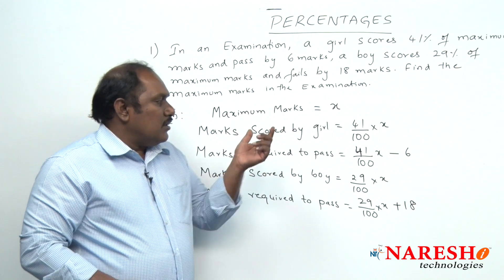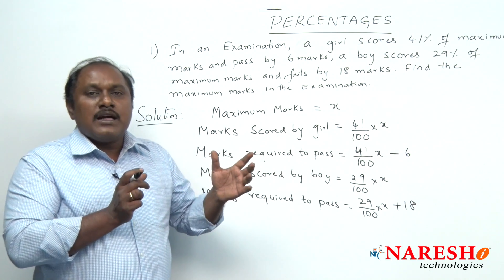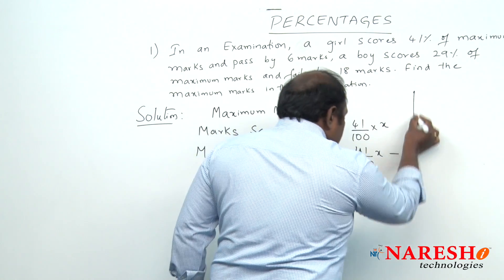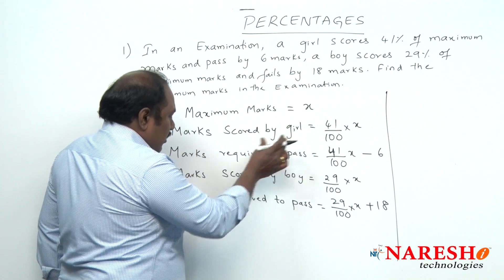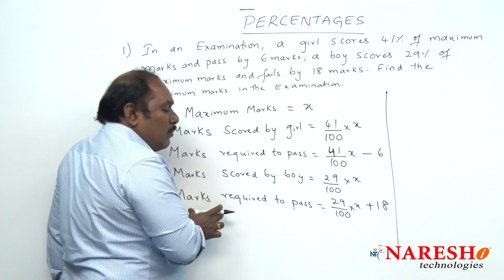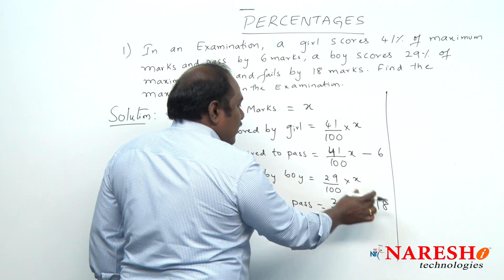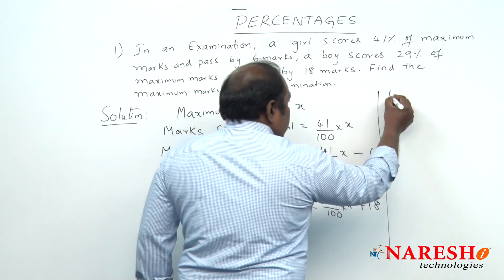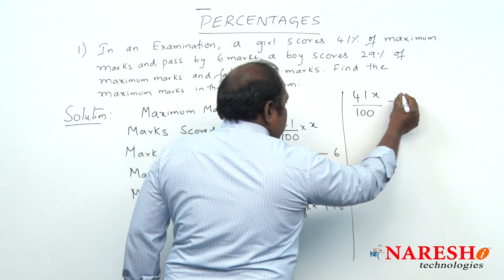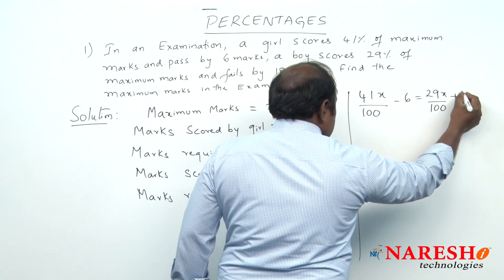Here both the girl and boy are writing the same examination, so definitely for both boy as well as girl, the marks required to pass should be equal. When I talk with respect to girl, marks required to pass is 41x/100 − 6, and with respect to boy, marks required to pass will be 29x/100 + 18. Both should be equal, so we write: 41x/100 − 6 = 29x/100 + 18.